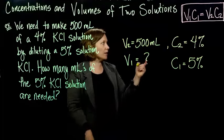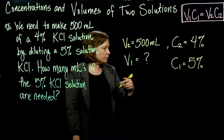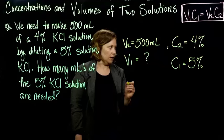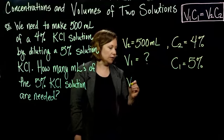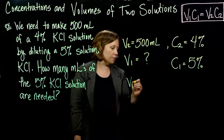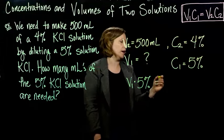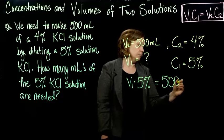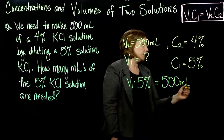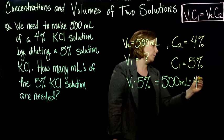So now let's just plug everything into our formula. So if I take V1 times my 5% should equal my V2, my 500 milliliters times my 4%.